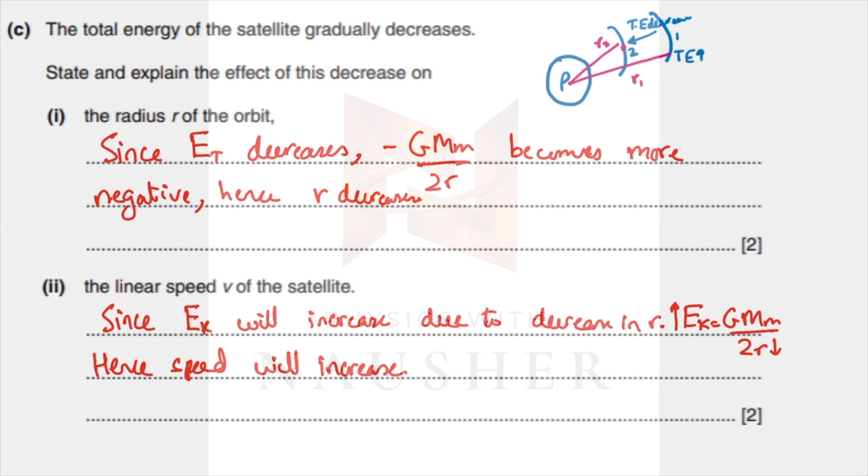Since total energy decreases, minus GMm over 2r becomes more negative, which means it's coming inward, which means r decreases.